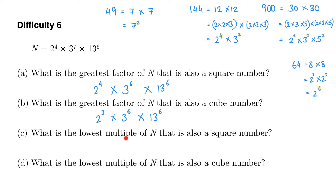Now we're onto multiples. We want the lowest multiple of n that is also a square number. Multiples of n have to contain all of these prime factors. If we want a square number we need indices that are all even, and those indices cannot be less than what we've got in n. So the lowest multiple of n that's also a square number will be 2 to the power of 4 times 3 to the power of 8 times 13 to the power of 6. I need all even indices that are at least as large as those in n.